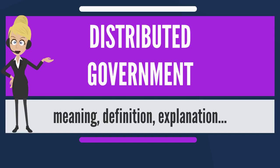Divided governments are contrasted by government trifectas, a different situation in which the same party controls both the executive and legislative branches. In systems with a strong president and prime minister, called semi-presidential systems, such as in France, divided government is known as cohabitation.